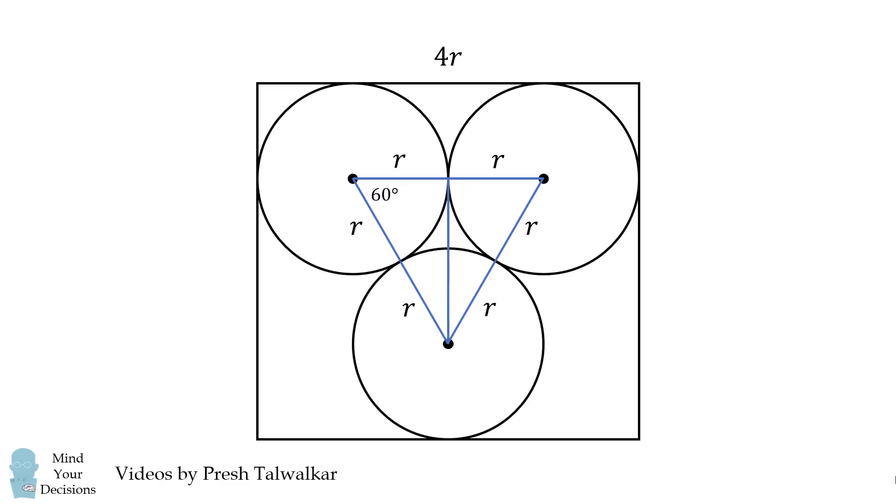We now draw an altitude as follows. This divides the equilateral triangle into two equal triangles that are 30, 60, and 90.